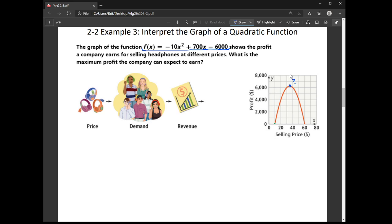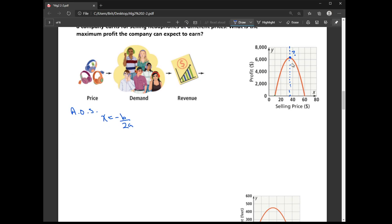Now recall that the vertex lies on the axis of symmetry. Alright, so I can find my axis of symmetry using the formula X equals negative B over 2A. Okay, and then I'll use that X value in order to find the Y value, which is my profit.